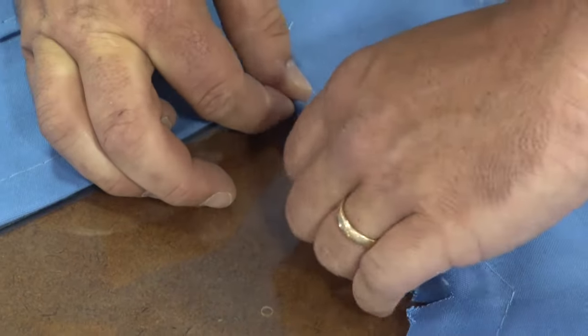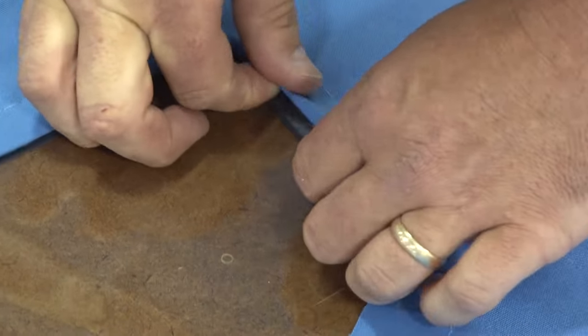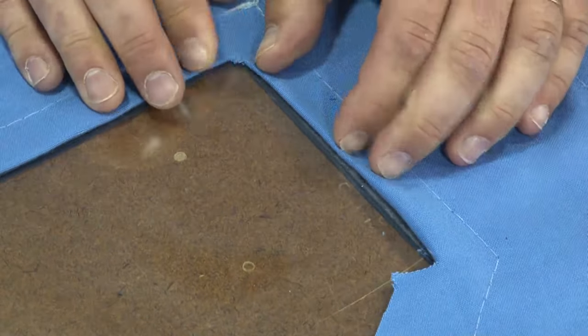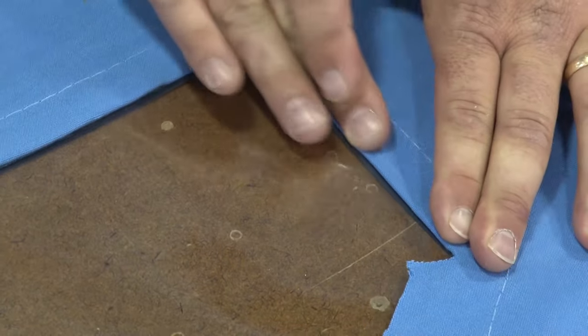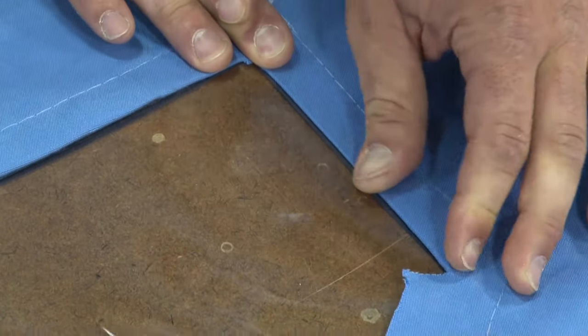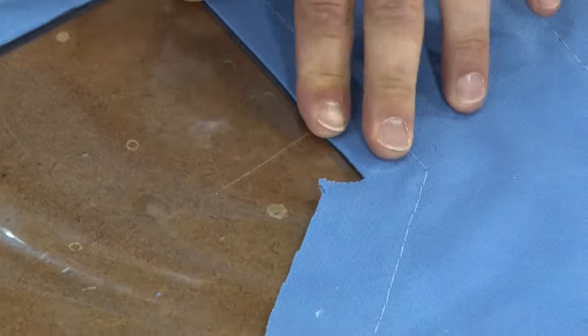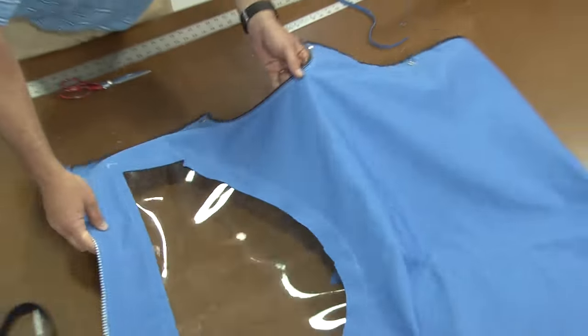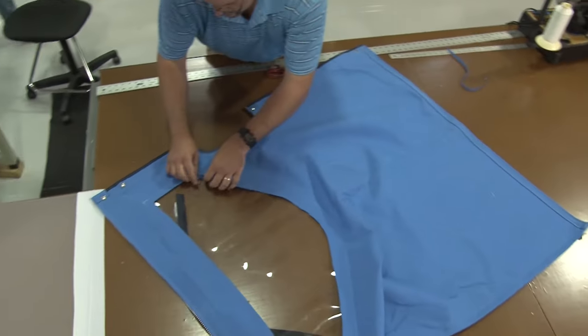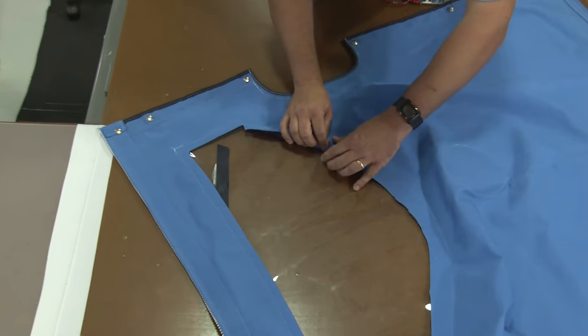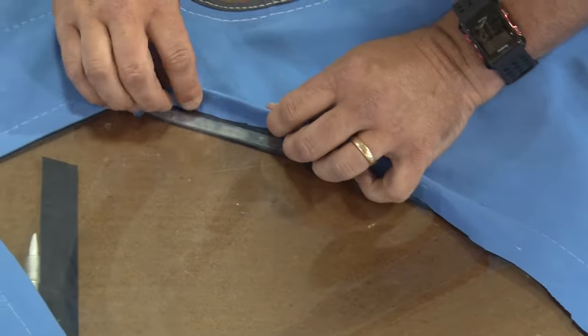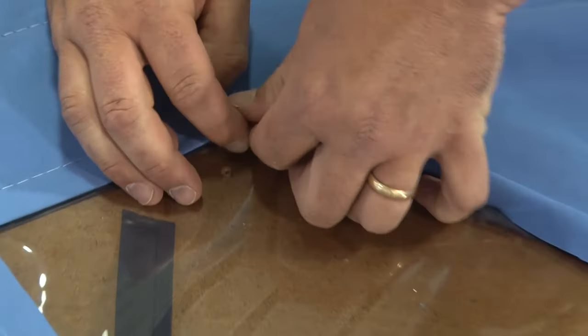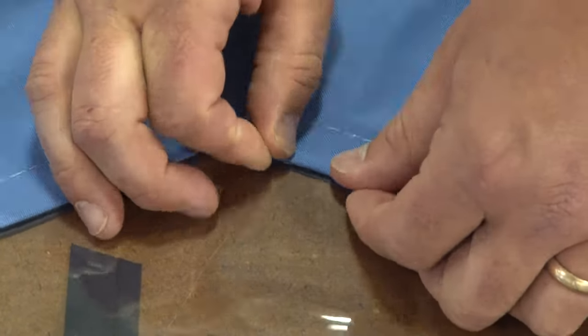Before we move on, we want to show working the corners where the miters have been cut. Same process. Creates a nice corner with those miters. Looks good. All right, do that around the entire perimeter and then you're ready to sew the last stitch. We just want to show a little bit of the curve here. And then we'll move on and we'll get ready to sow our last stitch.